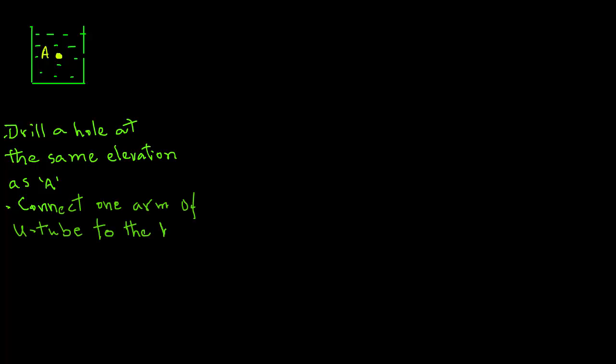If we have a vessel and we are interested in knowing the pressure at location A, then we will drill a small hole on the side of that vessel, which will be at the same height as location A. We will then connect one arm of the U-tube to that hole.